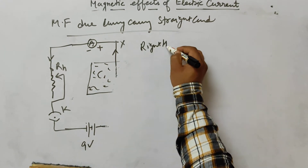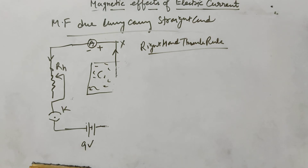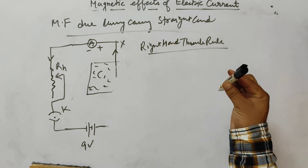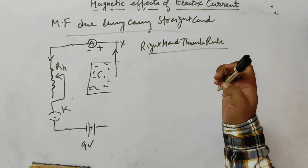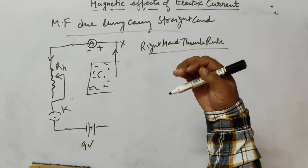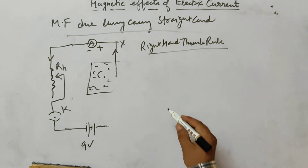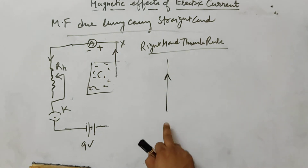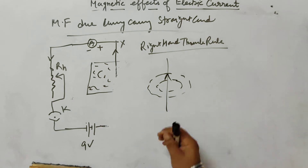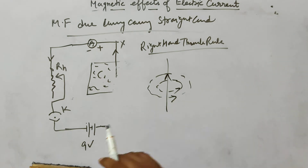To find the direction of the magnetic field, we use the right-hand thumb rule. Hold the conductor with the right hand such that the thumb points in the direction of current. Then the direction in which the fingers curl around the conductor gives the direction of the magnetic field lines in circles around the conductor.